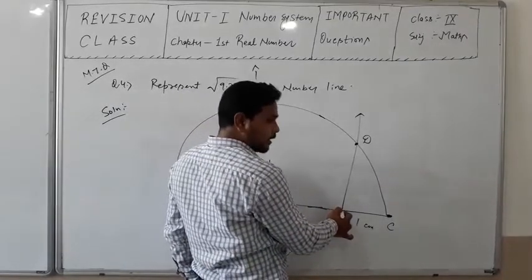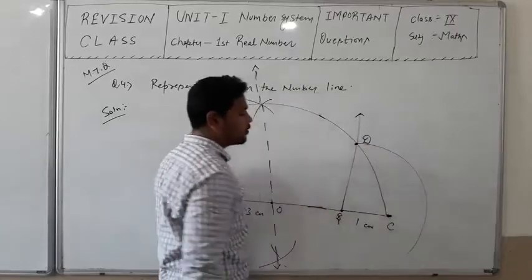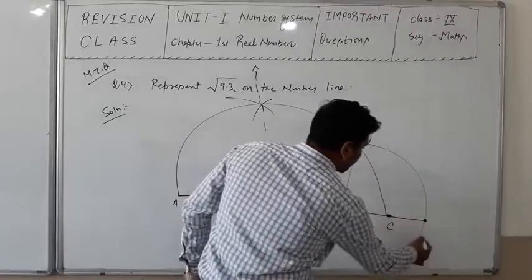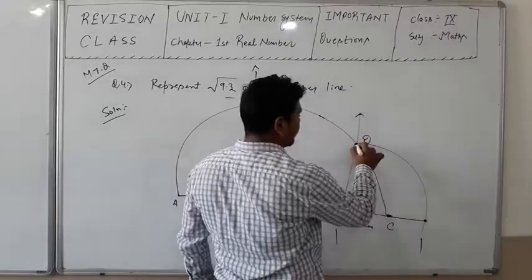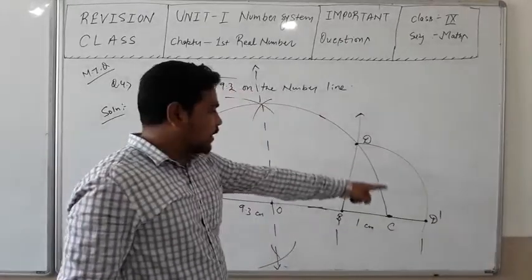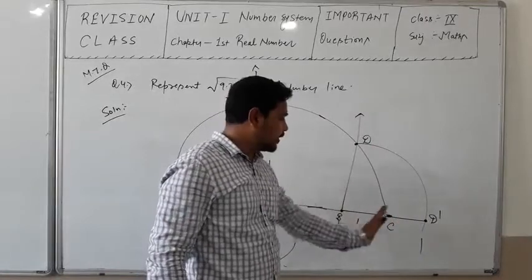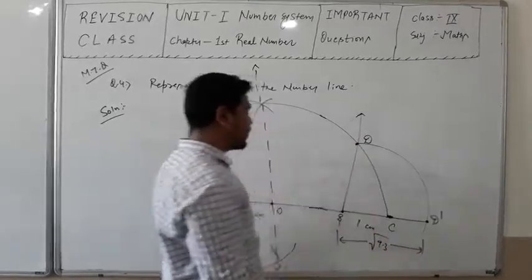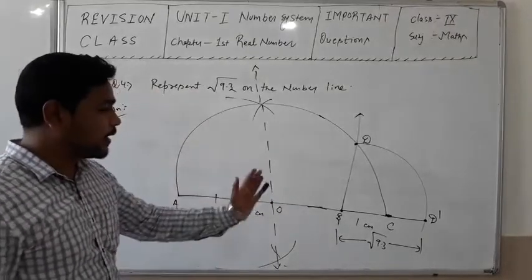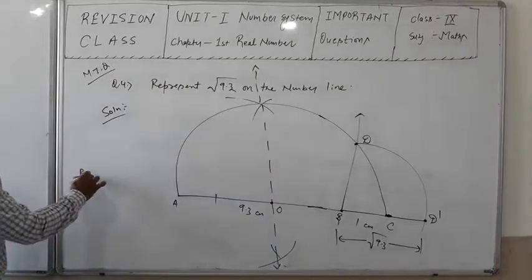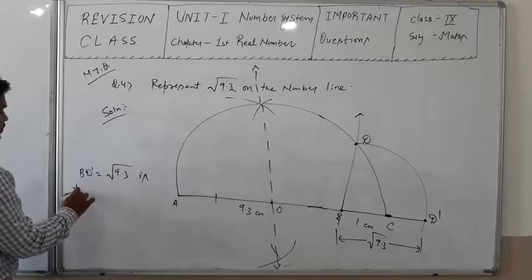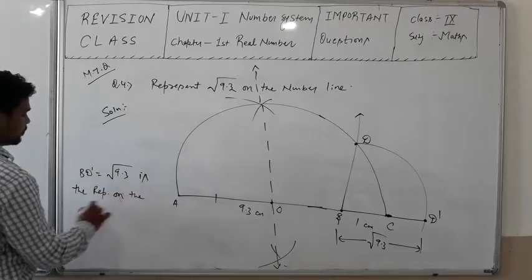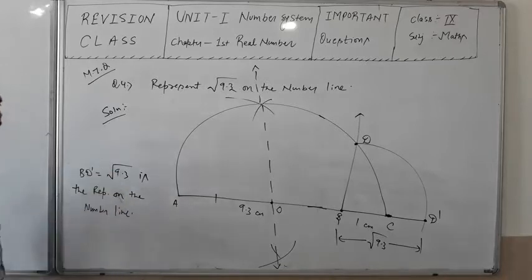Let D be the point where the perpendicular from B meets the semicircle. With D as center and BD as radius, we draw an arc on the number line. The point where this arc meets the number line is called D dash. The length BD dash is the representation of √9.3 on the number line. So BD dash = √9.3.